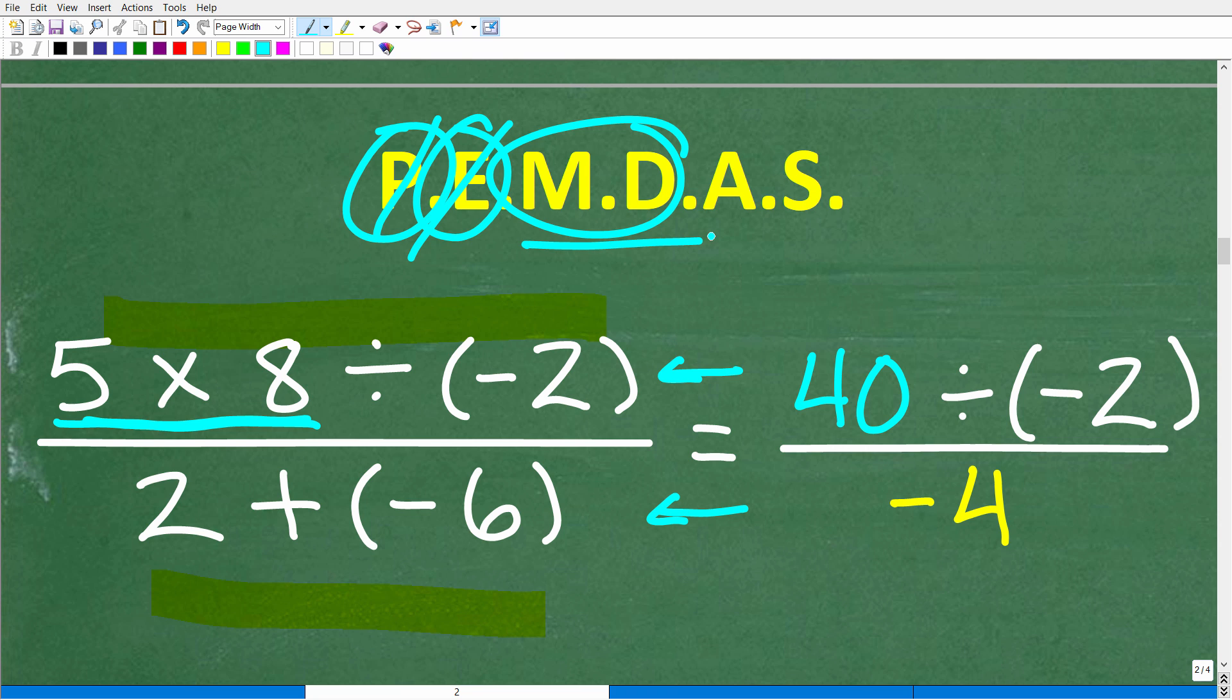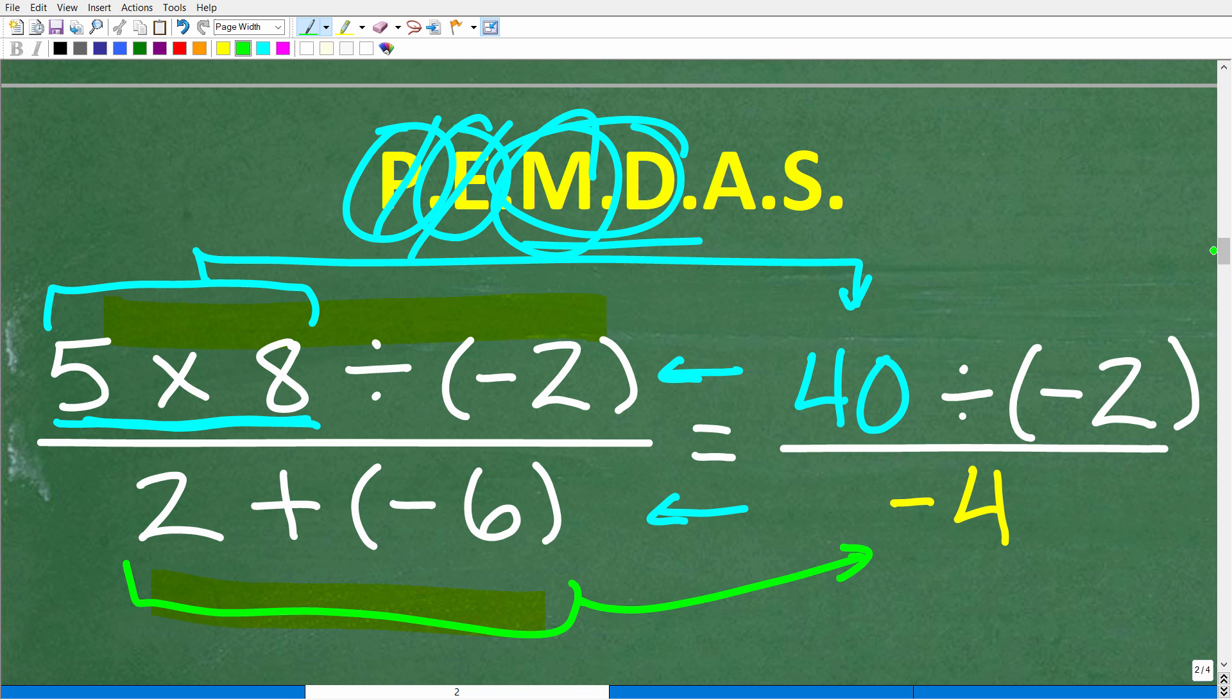So five times eight is of course 40. So now our numerator is 40 divided by negative two. And down in our denominator, we can skip ahead to addition and subtraction because this is its own separate problem. There's no multiplication or division here, but there is addition and subtraction. So two plus negative six is negative four. We are almost finished.